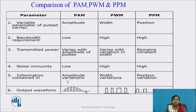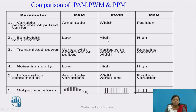Now, the comparison of PAM, PWM, and PPM. The first parameter is the variable parameter of the pulsed carrier. In PAM, the amplitude of pulses varies according to the continuous time signal. In PWM, the width of pulses varies according to the amplitude of the continuous time signal. In PPM, the position of pulses varies according to the continuous time signal. Regarding bandwidth requirement: PAM requires low bandwidth; PWM requires high bandwidth as the width varies continuously; PPM also requires higher bandwidth as the position of pulses varies.